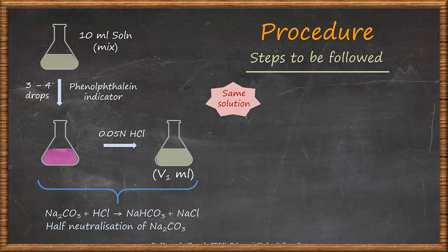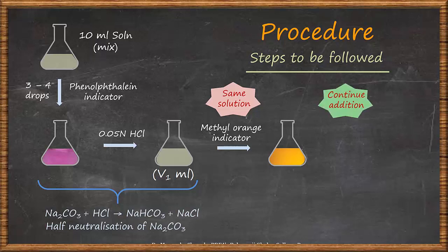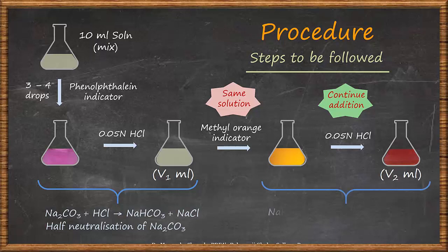In this same colourless solution, we add about 3 to 4 drops of methyl orange indicator so that the solution becomes yellow. Then we continue the addition of HCl. The colour change here is from yellow to orange-red, and the end point is noted as V2 ml. At this stage, the sodium hydrogen carbonate formed by the half neutralisation of sodium carbonate and the sodium hydrogen carbonate originally present in the solution together react with HCl. So the mixture of sodium carbonate and sodium hydrogen carbonate has fully reacted with HCl.